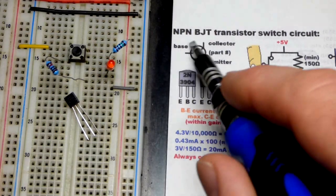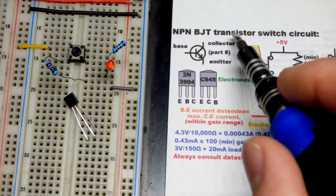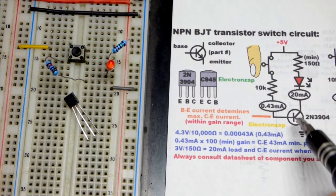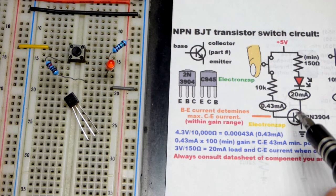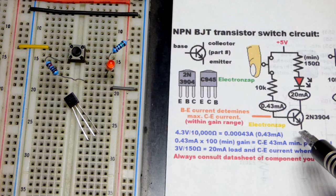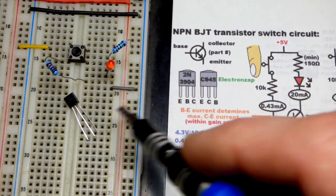In this video we're going to introduce the NPN bipolar junction transistor to this series of videos. Transistors in general have the basic property of a weak signal being able to control how well the transistor conducts. Thus you can take a weak signal and control a much more power hungry circuit. We're going to use the 2N3904.